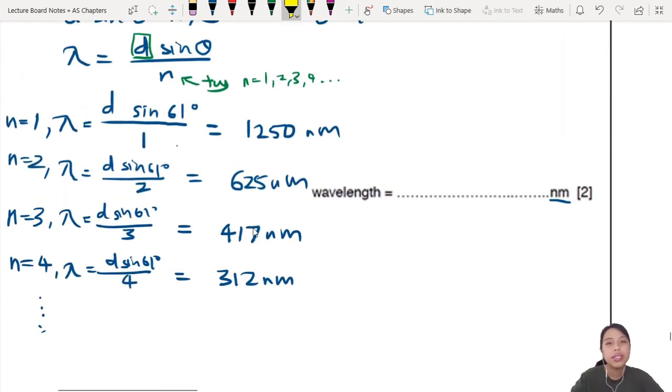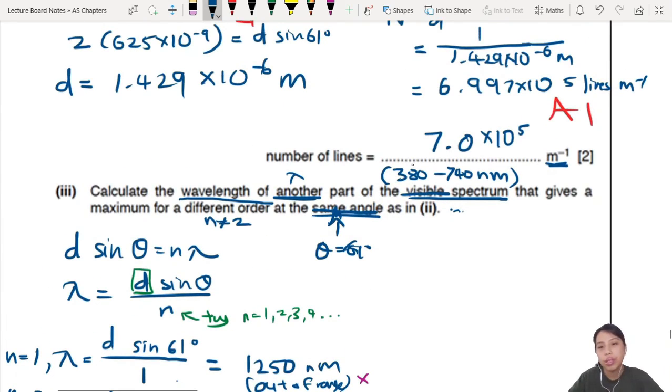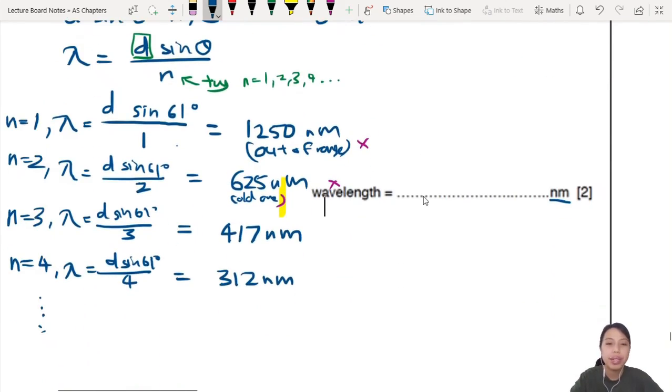So visible spectrum can either be 380 to 740 only. So if you look at your range, this is out of range. So cannot be that one already. 625 is the old one, your old order, and it goes 2. So we don't want that. Cannot also, cannot be. 417, is it within range of visible spectrum? 380 to 740. Yes. Maybe.